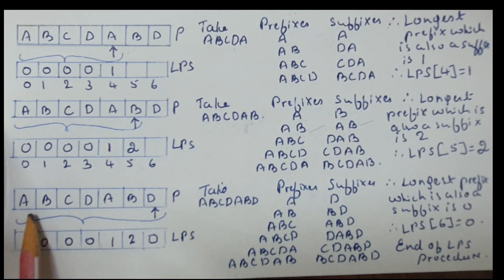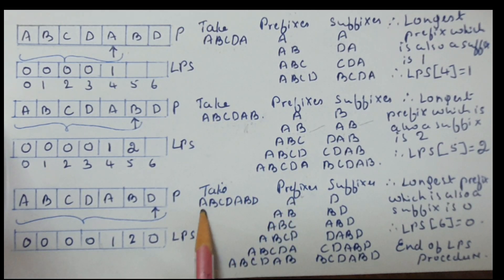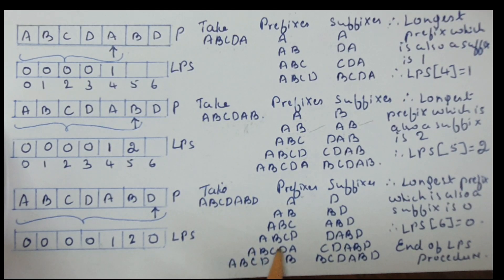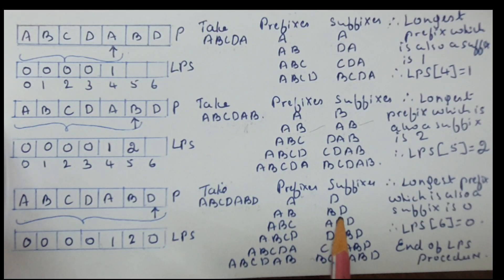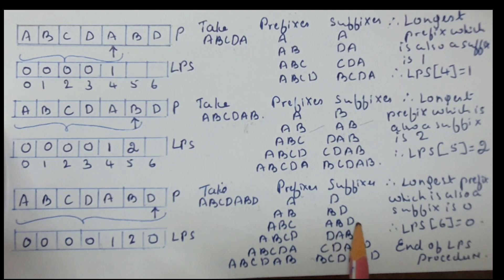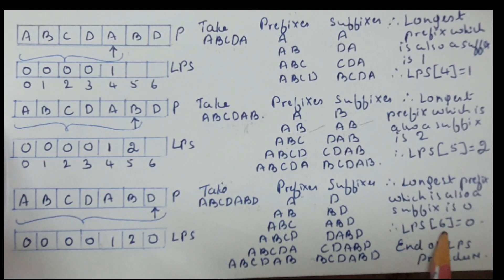The last step: all 7 characters ABCDABD are considered and LPS[6] has to be filled. Prefixes are A, AB, ABC, ABCD, ABCDA, ABCDAB; suffixes are D, BD, ABD, DABD, CDABD, BCDABD. Comparing all prefix-suffix pairs: none are equal. Hence the longest prefix which is also suffix is 0. LPS[6] = 0. This completes the LPS lookup table computation.